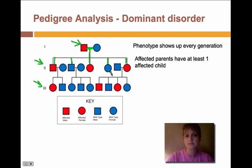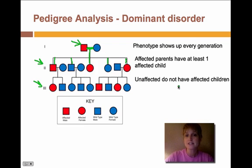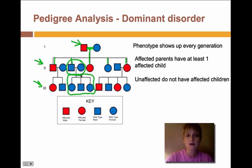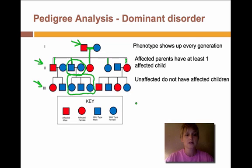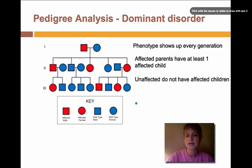Another characteristic is that unaffected children do not have affected children. If you look here, this unaffected child from these parents — all three of their children are unaffected by that disorder. So those are some of the keys we can use when looking at a chart like this. We can also figure out alleles from this.